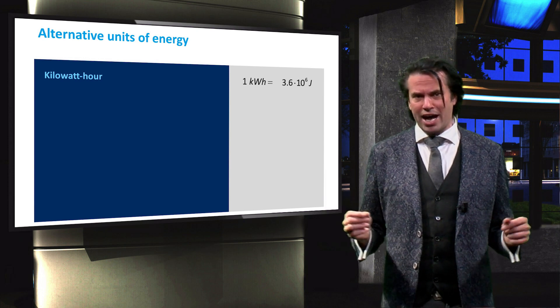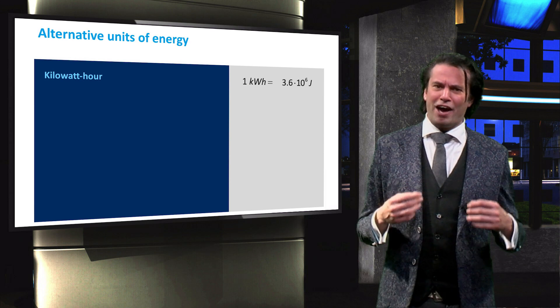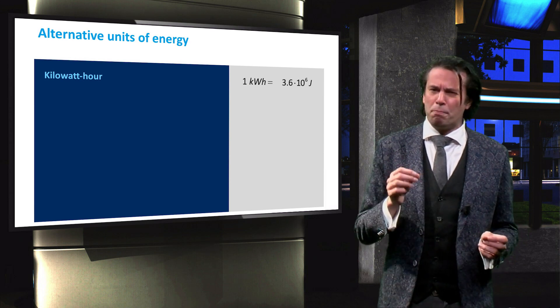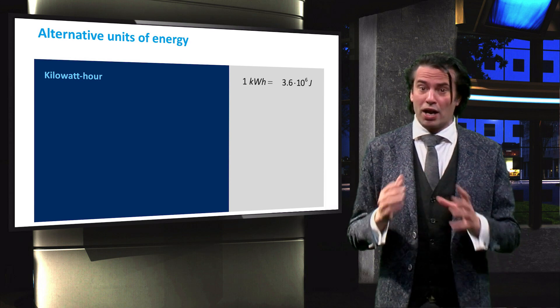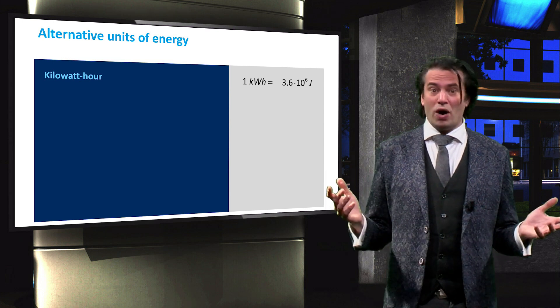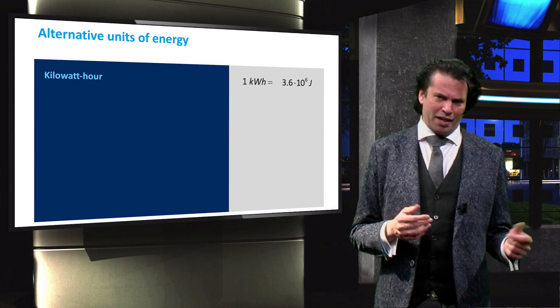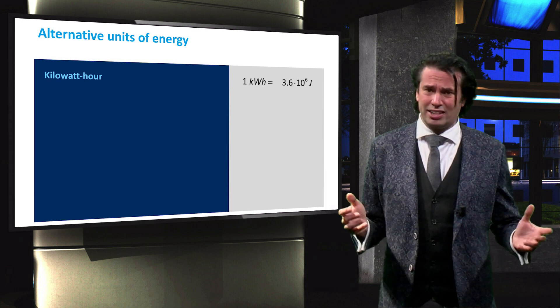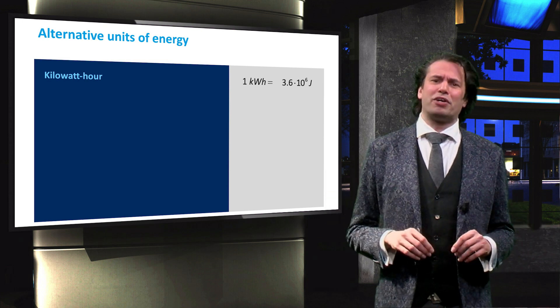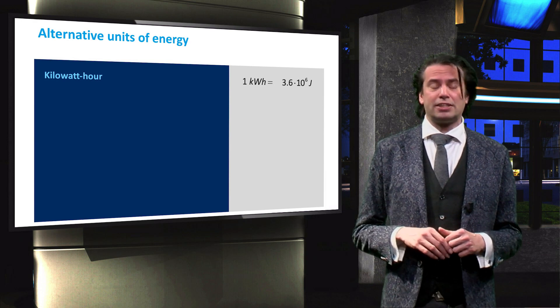One kilowatt hour, as the name implies, is the amount of energy consumed if a power of one kilowatt is applied for one hour. Since 1 kilowatt is equal to 1000 joules per second, and there are 3600 seconds in an hour, 1 kilowatt hour is equal to 3.6 megajoules.